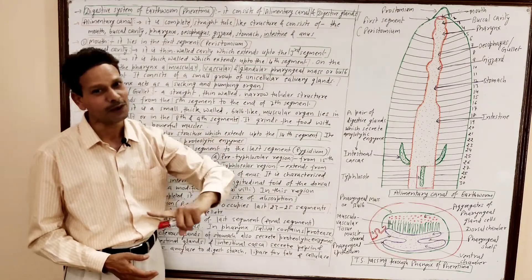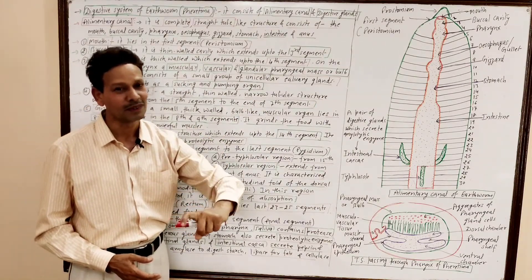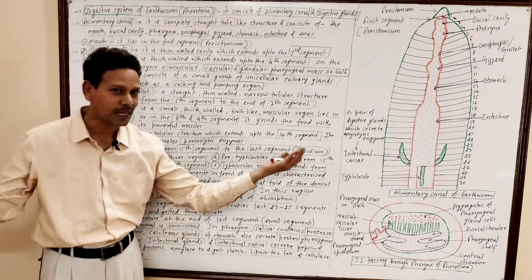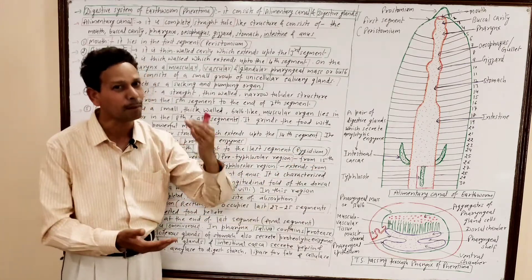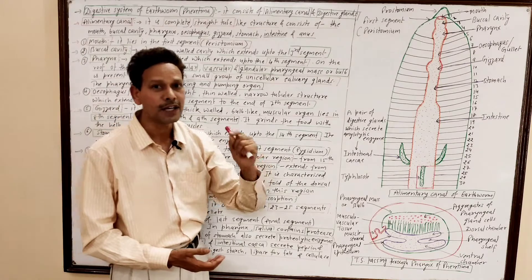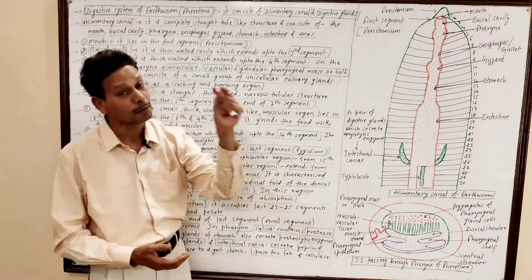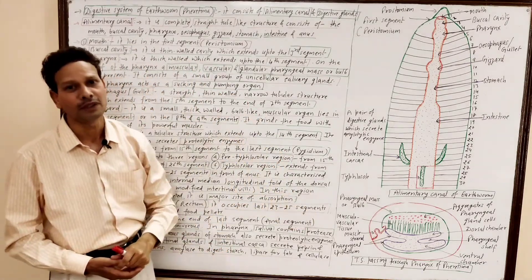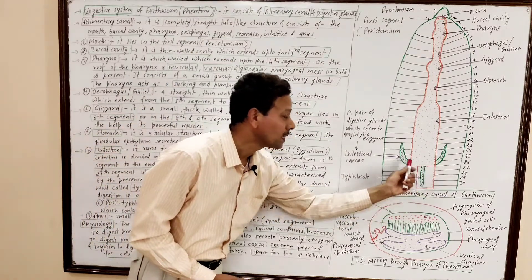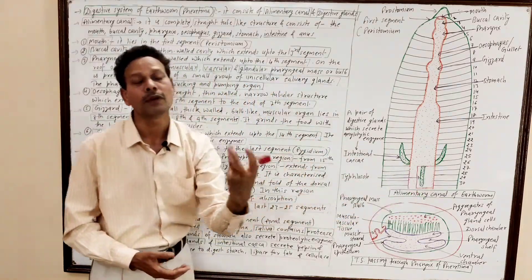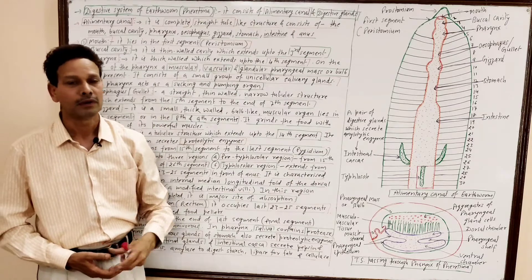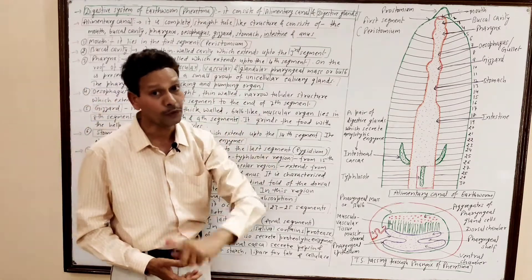The intestine also secretes cellulase enzyme for the digestion of cellulose. This means complete digestion particularly takes place, as well as absorption of food, in the middle part of the intestine — the typhlosole region — which is the main site of digestion and absorption of food. The undigested food in the form of pellets, the worm castings, is removed through the anus.